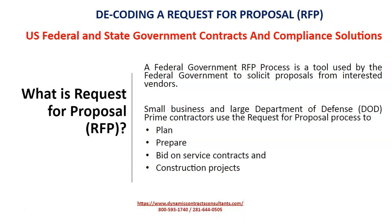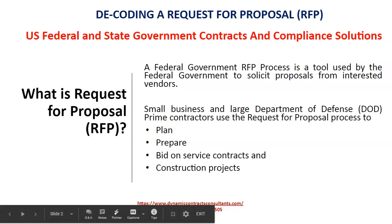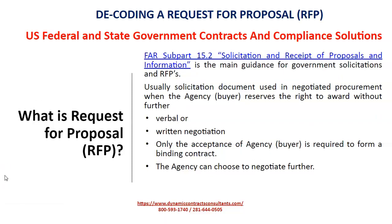Exactly what is Request for Proposal — RFP? A federal government RFP process is a tool used by the federal government to solicit proposals from interested vendors. Small business and large Department of Defense prime contractors use the Request for Proposal process to plan, prepare, bid on service contracts, and construction projects. FAR Subpart 15.2, Solicitation and Receipt of Proposals and Information, is the main guidance for government solicitations and RFPs. Usually, a solicitation document used in negotiated procurement is used when the agency or buyer reserves the right to award without further verbal or written negotiation. Only the acceptance of the agency or buyer is required to form a binding contract, though the agency can choose to negotiate further.